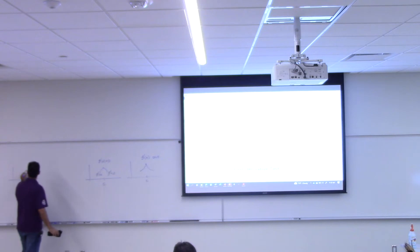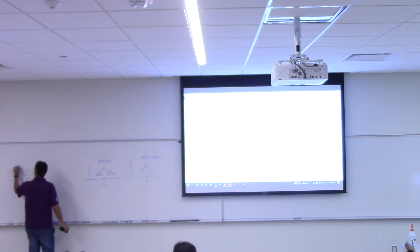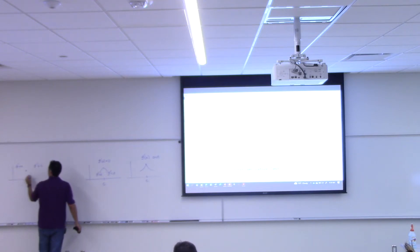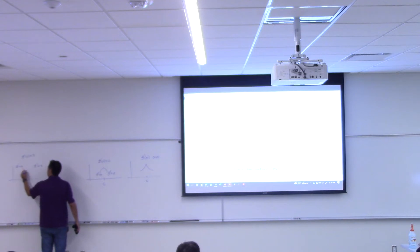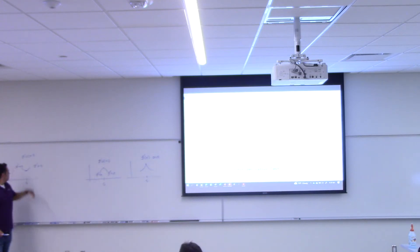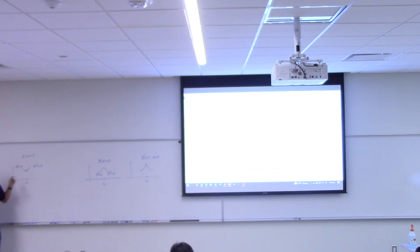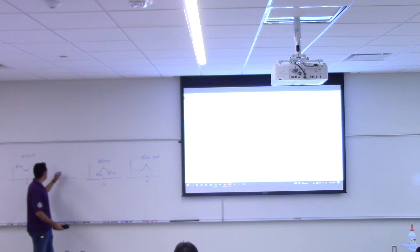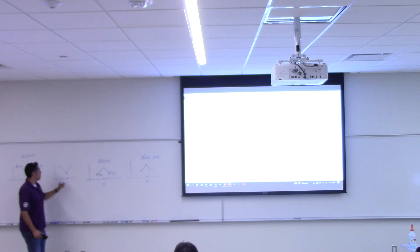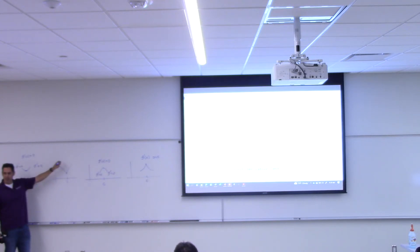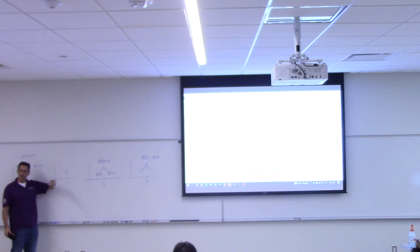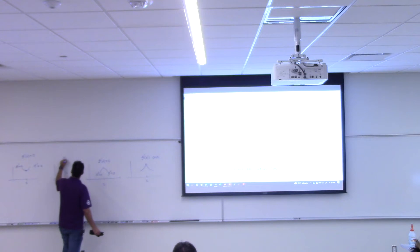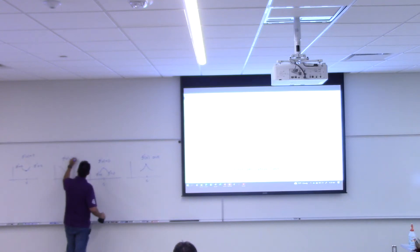Let's say I have a point c where the derivative over here is negative, the derivative over here is positive, and at c the derivative is zero. Then it's going to look like a valley — negative derivative to the left, positive derivative to the right, derivative is zero at that point. That's a local minimum. I could also do it with a corner or cusp, where at c the derivative doesn't exist, but to the left it's negative and to the right it's positive.